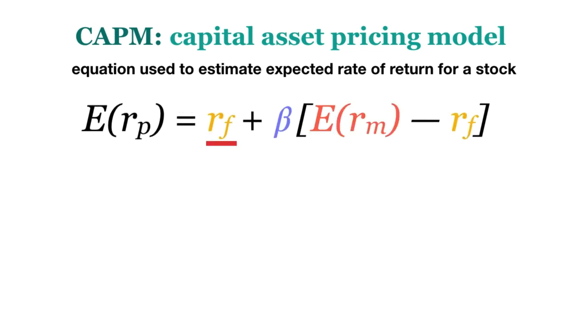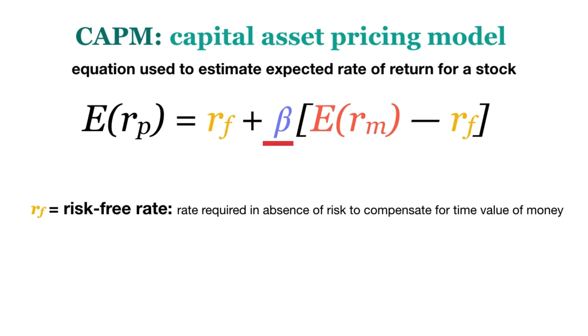RF is the risk-free rate. This is the rate of return investors require in the absence of any risk to compensate them for the time value of money. Beta is essentially meant to capture the risk of an asset relative to the market. We will be talking about beta in further detail in its own video.